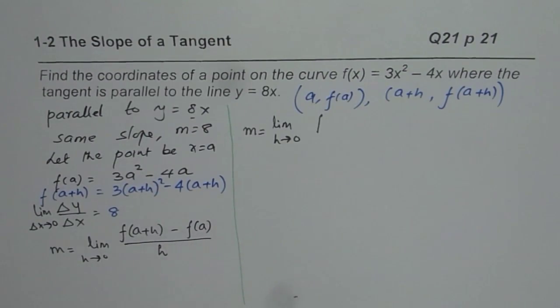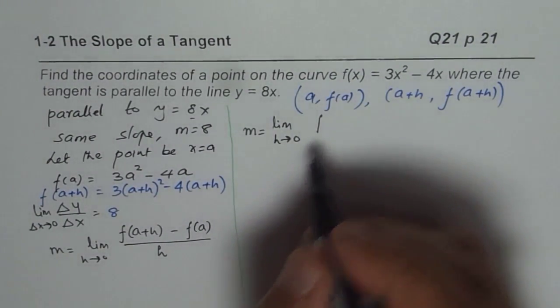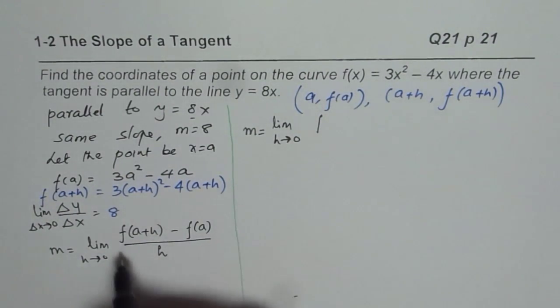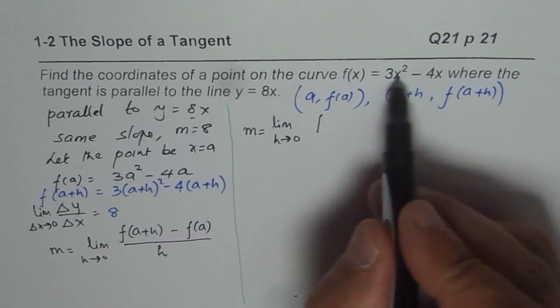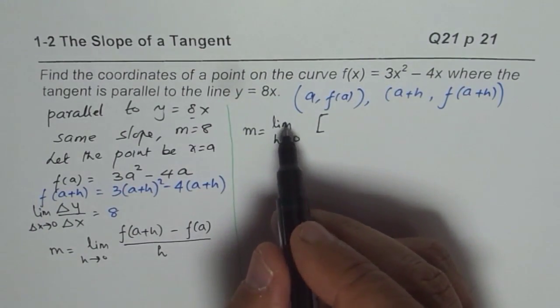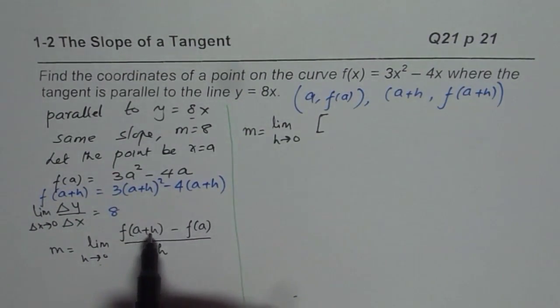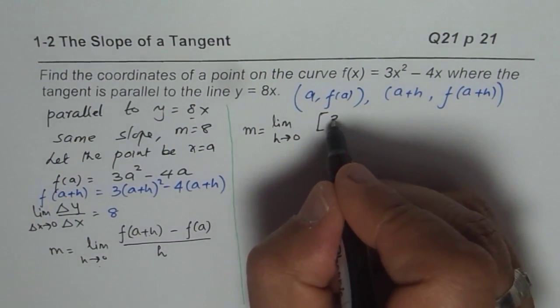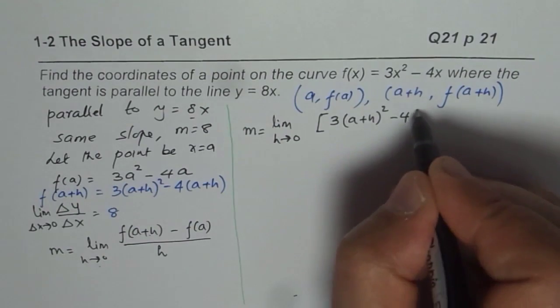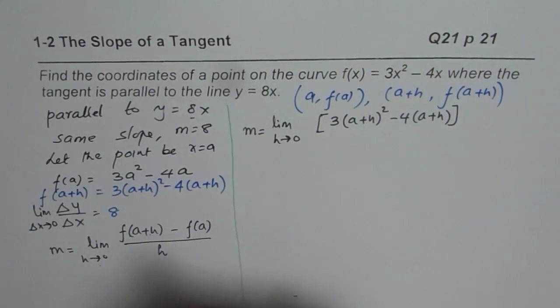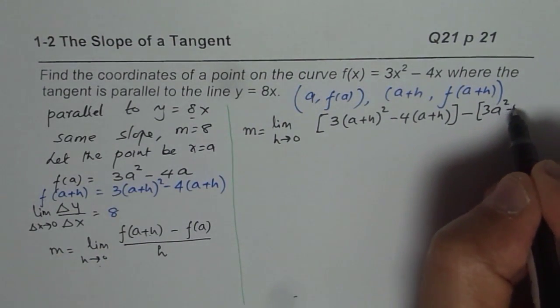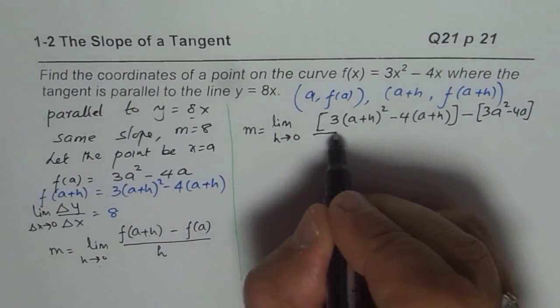That is the formula which we are using, and let us write down what f(a+h) is. f(a+h) is, in this formula, we will replace x with a+h. So, I will substitute the values here. Limit of this function, f(a+h) is 3(a+h)² - 4(a+h), minus f(a), which means 3a² - 4a, divided by h.